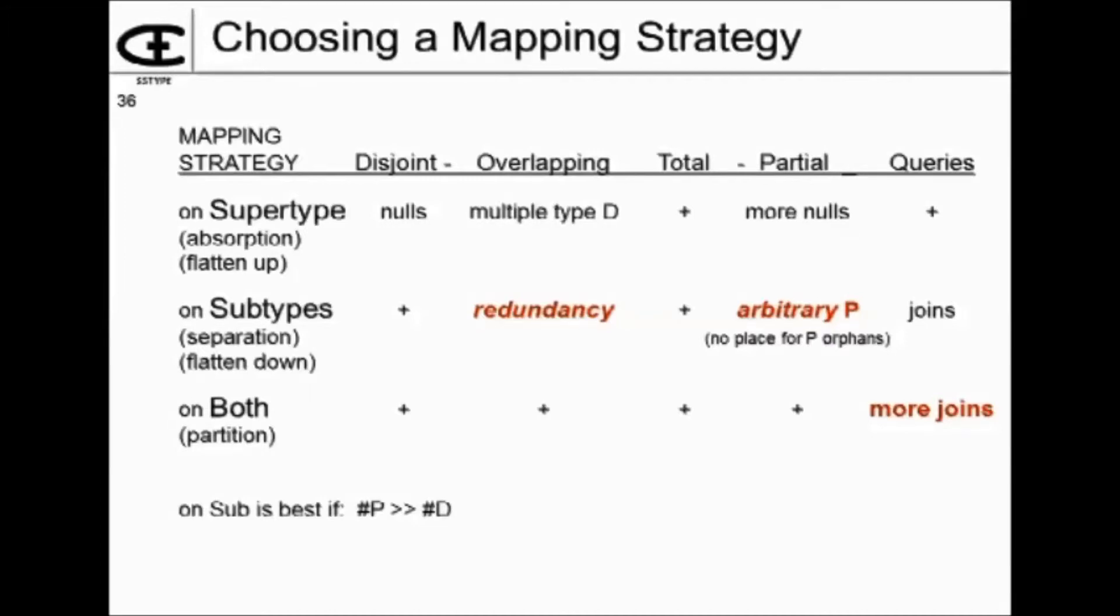On the supertype, if you've got a disjoint, then there will be lots of nulls. The pluses here are showing what it's an advantage for. On the subtypes, if they're overlapping subtypes, then you'll get some redundancy.